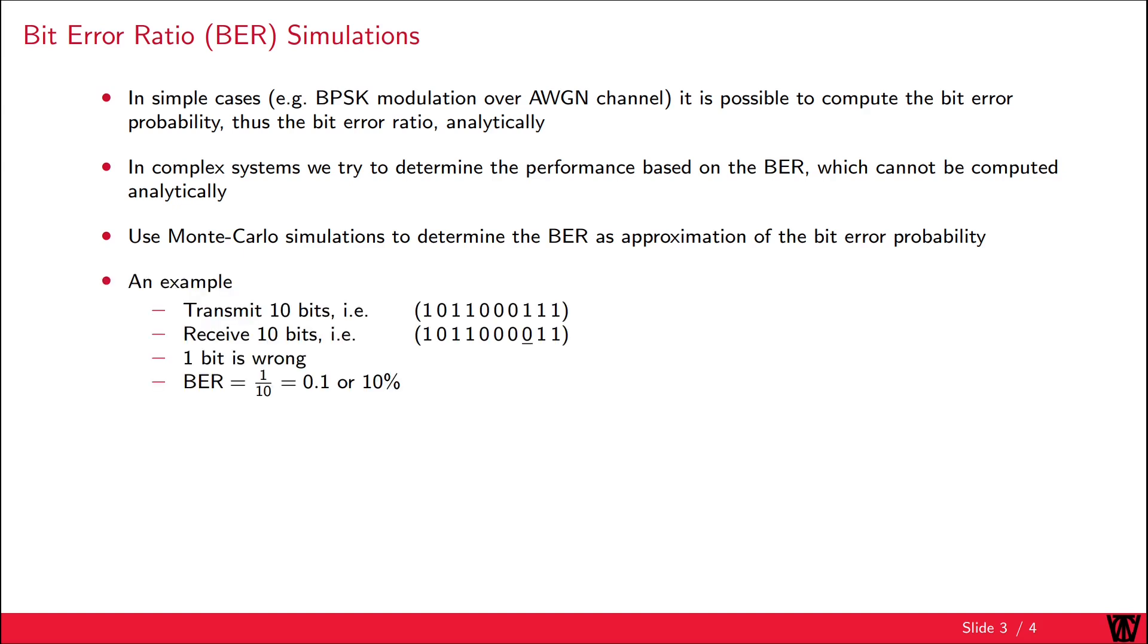Let's look at an example for the bit error ratio. We transmit 10 bits, i.e., (1011000111). At the receiver, we receive 10 bits (1011000011), but one bit has an error. To calculate the bit error ratio, we divide the number of erroneous bits by the total number of bits.